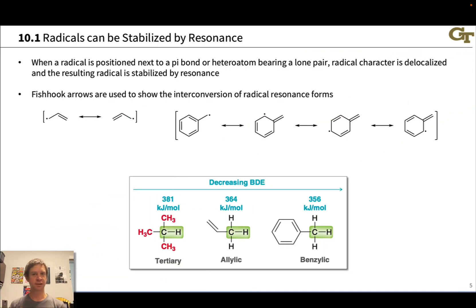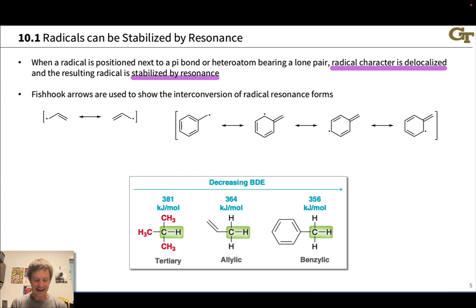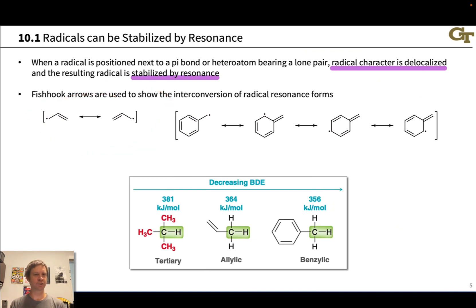Radicals can also be stabilized by resonance because resonance delocalizes the radical character, spreading out the unpaired electron, and this leads to a stabilizing effect. Radicals that are adjacent to pi bonds or heteroatoms bearing lone pairs are quite frequently stabilized by resonance. We can actually use these fishhook or one-electron curved arrows to show the interconversion of different radical resonance forms, and to illustrate how this works with the allyl radical, we want to highlight the electrons and follow them one by one.